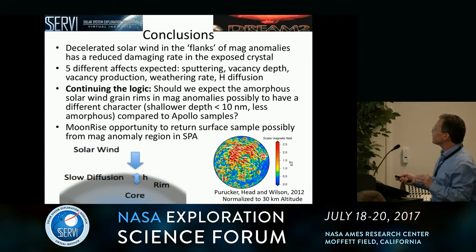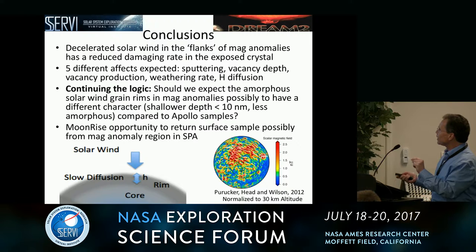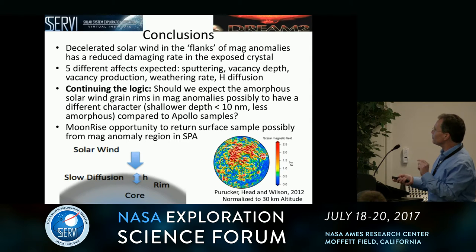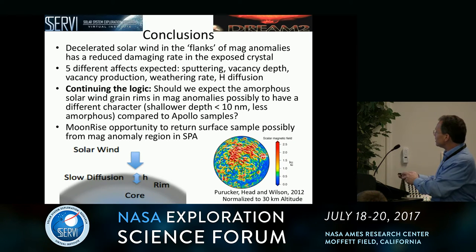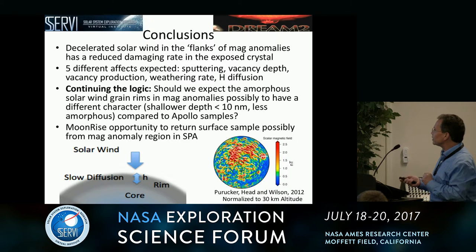If we continue this logic, we might ask: should we expect the amorphous solar wind grain rims — the rims at the very top formed from solar wind, not from impact condensate — to be a little thinner and not as well developed as compared to the Apollo samples? After all, we're only getting these protons in at around 10 nanometers or less. Moonrise may give us an opportunity to test this, because the South Pole Aitken Basin has a lot of magnetic anomalies. Bose Crater, one of their sites, is right over a weaker magnetic anomaly, and maybe there could be evidence for these different kinds of rims in that data set when they return a sample.